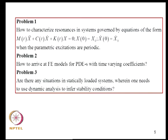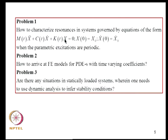We will consider three problems. First, how to characterize resonances in systems governed by equations of the form M(t)Ẍ + C(t)Ẋ + K(t)X = 0. The resonances occur because there are time varying terms in the mass, stiffness, and damping matrices. If these terms are periodic, we can ask whether the steady state responses remain bounded or grow in time.